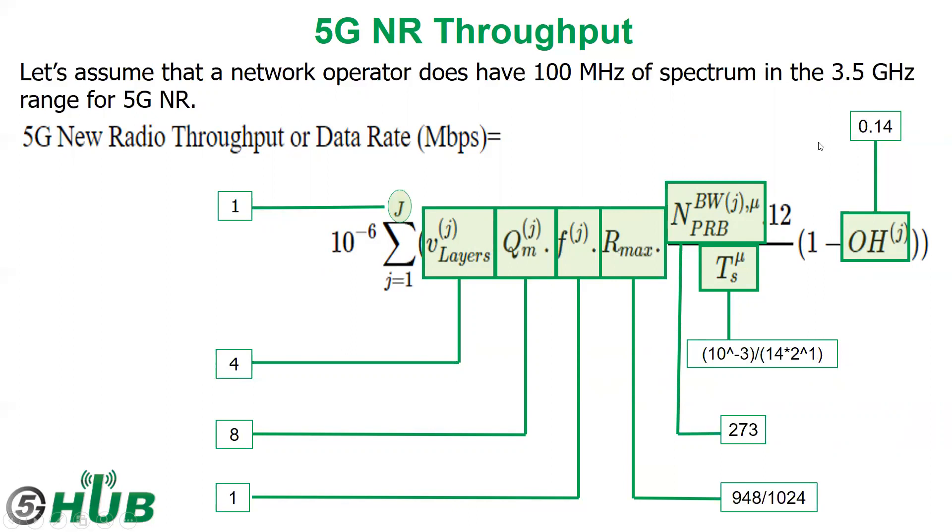So we can calculate the 5G new radio throughput or data rate in megabit per second or gigabit per second to be 2.34 gigabit per second. This is for 5G new radio throughput calculation.